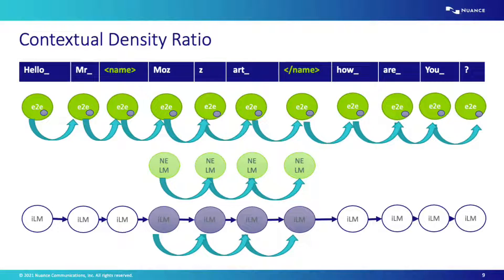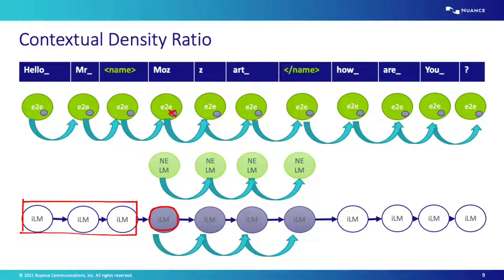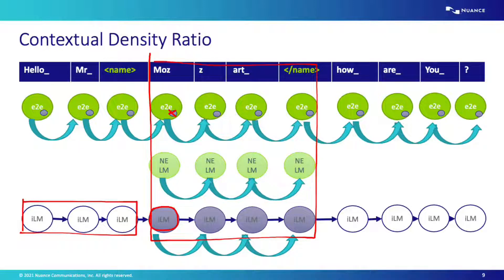In the Contextual Density Ratio, on top of this shallow fusion component, we add an internal language model component that we intend to counterbalance the internal language model distribution that the end-to-end system has. Note that this internal language model representation must update its context when outside the tags, but its score is only added within the named entity region. So when within a named entity segment, each token is scored with three components: the end-to-end system, the named entity language model to bias towards the expected deployment distribution, and the internal language model representation to counterbalance the end-to-end system's internal language model.